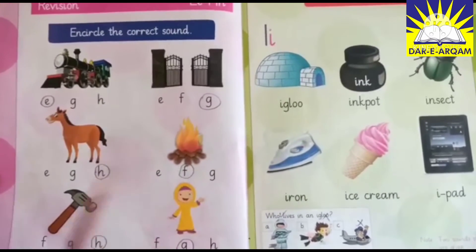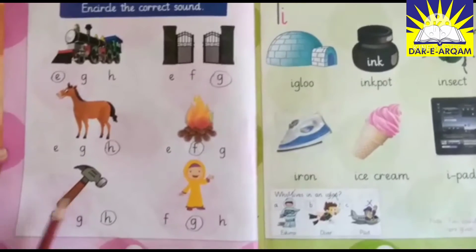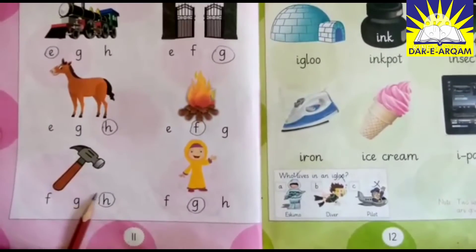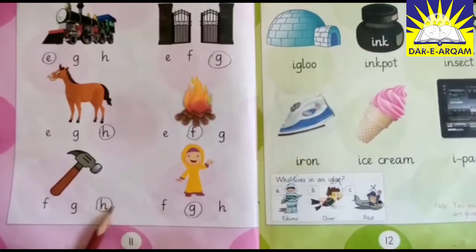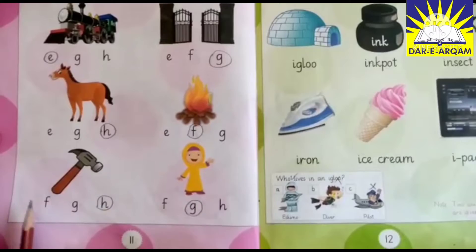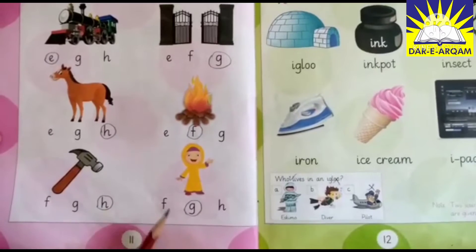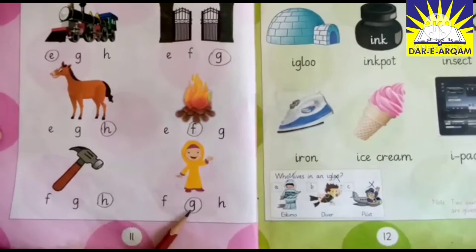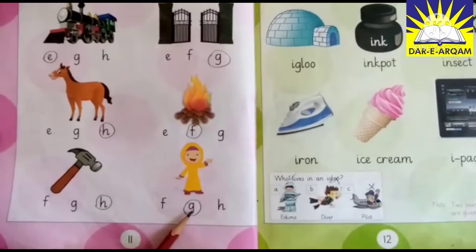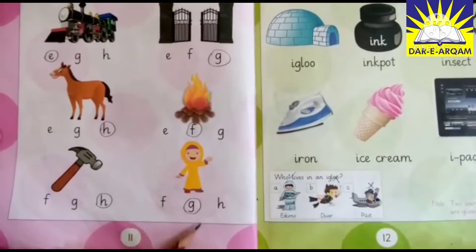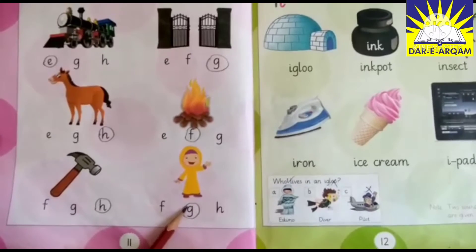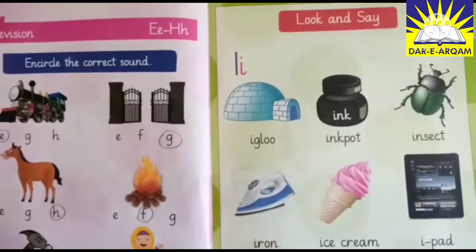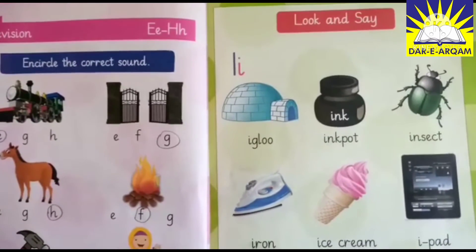F, circle the gate. Hammer beginning sound: H. H, circle the gate. Girl beginning sound: G. G, circle the gate. Turn to the next page.